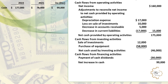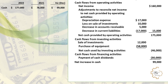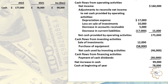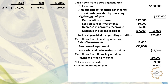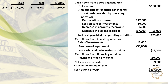175 − 46 − 30 = $99,000 net increase in cash. Add cash at the beginning of the year, $78,000. The result is cash at the end of the year: $177,000.